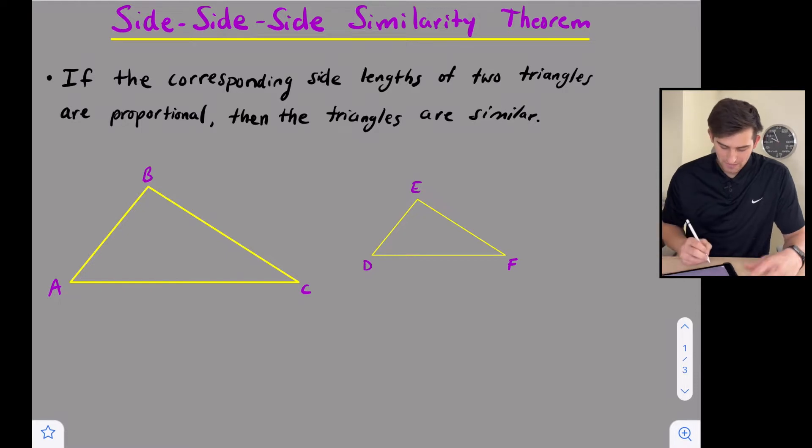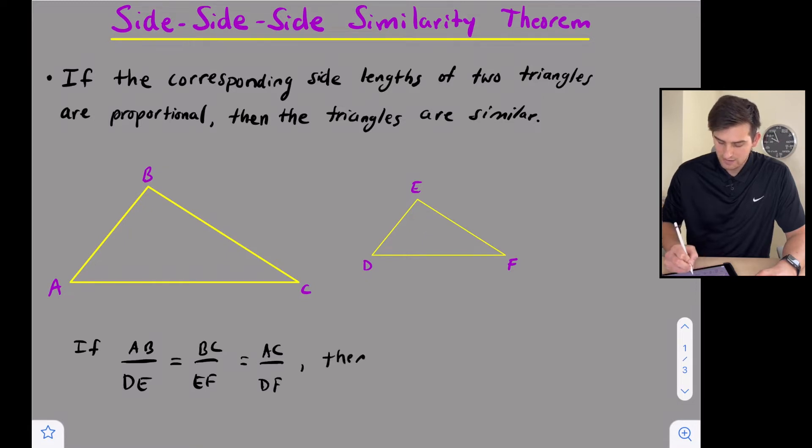So let's look at these two triangles we have right here. If we have triangle ABC and triangle DEF, if AB over DE is equal to BC over EF, which is equal to AC over DF, then we can say the two triangles are similar. That's what this similarity theorem is telling us, that our corresponding sides are proportional.